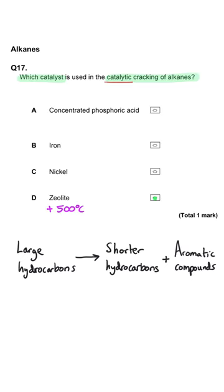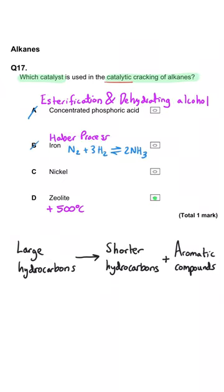The other three are good kind of decoys because they're all catalysts that you need to know. Concentrated phosphoric acid is used in both esterification and in the dehydration of alcohols. Iron is a catalyst used in the Haber process where nitrogen and hydrogen are converted into ammonia.